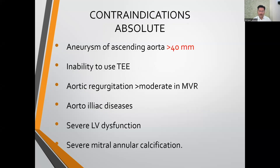There are absolute and relative contraindications for MICS, and patient selection is very important. Absolute contraindications include: aneurysm of the ascending aorta more than 40 mm; any condition where TEE cannot be used; aortic regurgitation more than moderate in a case of MVR or CABG; aortoiliac disease since cannulation is femoral; severe LV dysfunction; and severe mitral annular calcification.